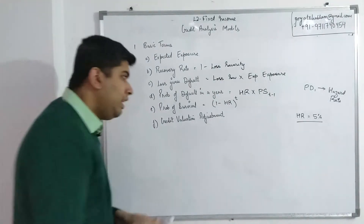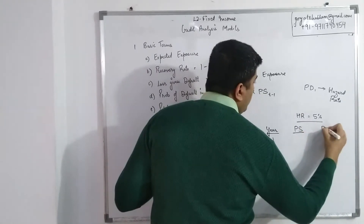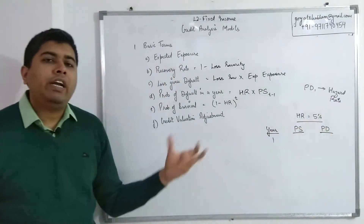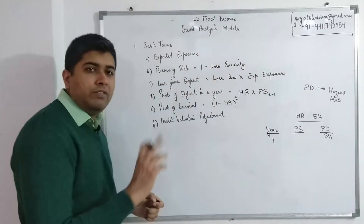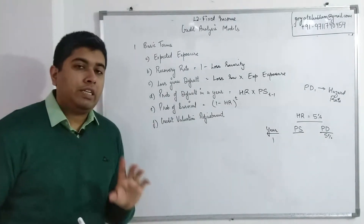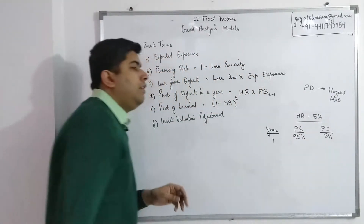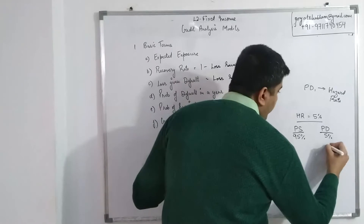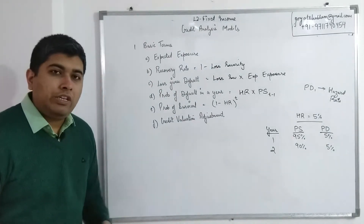In year one, probability of default is the hazard rate itself — 5%. If there is a 5% chance the company defaults, there is a 95% chance it survives the year. So probability of survival in year one is 95%. Now for the second year, under a naive calculation you might just put 5% again and 90% survival, but that would be wrong — and this is where the conditional probability concept becomes relevant.